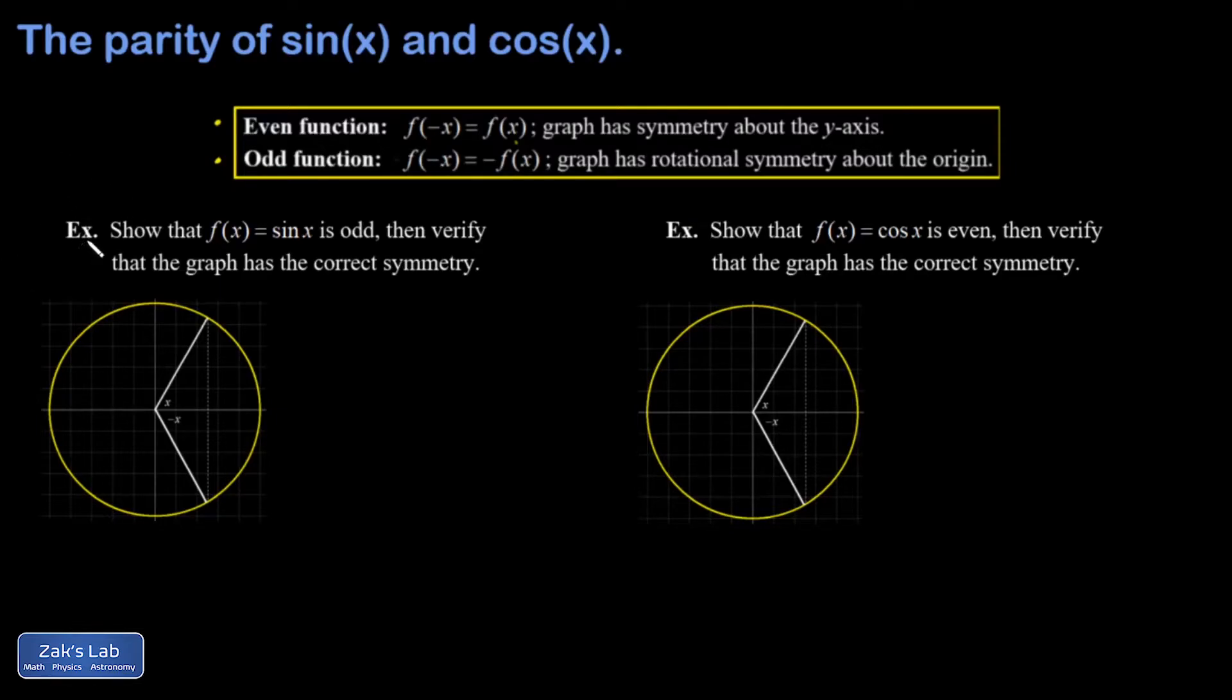In our first example, we're trying to show that the sine function is odd. We accomplish this by going back to where the sine function was defined, and that's the unit circle. This radius is 1, and I labeled an angle of x and an angle of negative x because I want to compare sin(x) and sin(-x) to do this algebraic test.